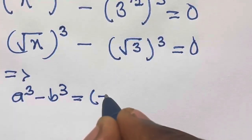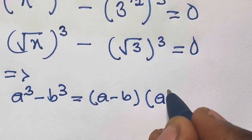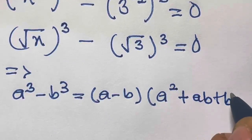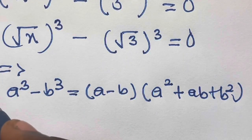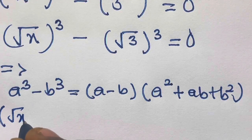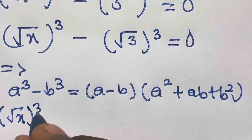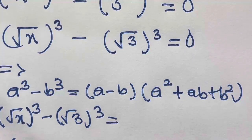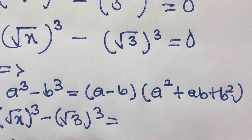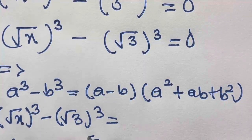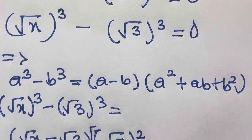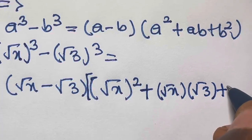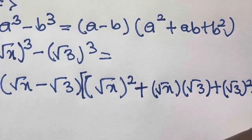To simplify this, let's recall that a^3 minus b^3 equals (a minus b)(a squared plus ab plus b squared). Applying this, with a equals square root of x and b equals square root of 3, we get: square root of x cubed minus square root of 3 cubed equals (square root of x minus square root of 3) times (square root of x squared plus square root of x times square root of 3 plus square root of 3 squared) equals 0.